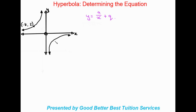Today's lesson we'll be looking at determining the equation. Looking at our example on the left-hand side, we've got a hyperbola that is in the first and fourth quadrant, so we already know what our a value will look like — whether it be positive or negative.